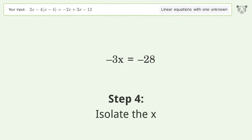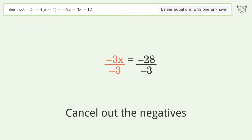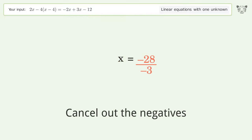Isolate the x. Divide both sides by negative 3. Cancel out the negatives. Simplify the fraction. Cancel out the negatives.